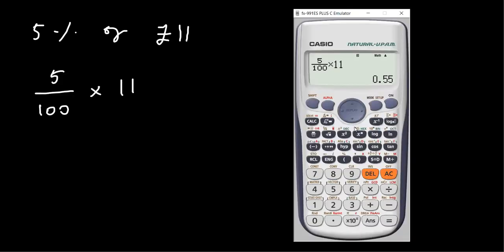In this video we learn how to find percentages using the calculator. So for example, five percent of 11 pounds. We start by writing the percentage as a fraction, so that would be five over 100, and then off 11 just means times 11. Then we go ahead and enter that into the calculator.